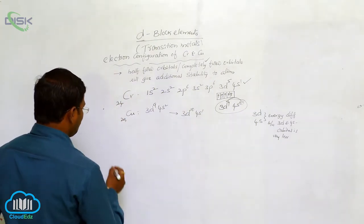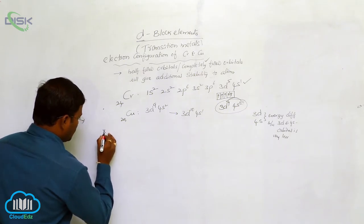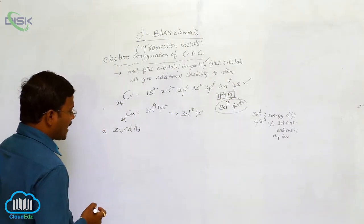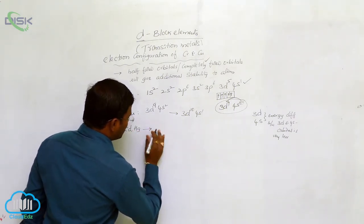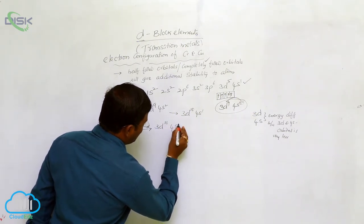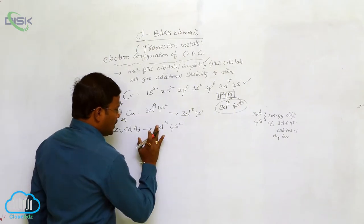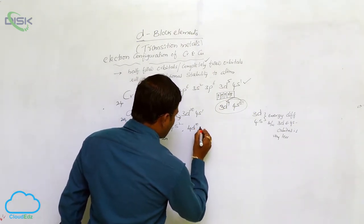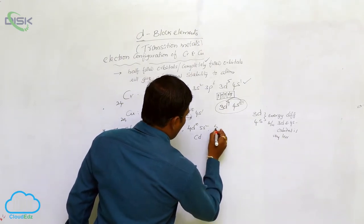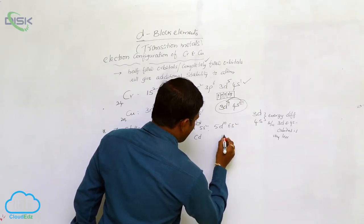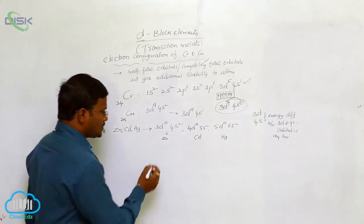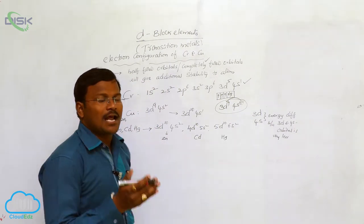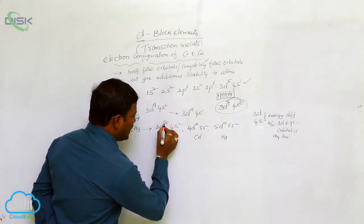Next, consider zinc, cadmium, and mercury. When we observe the valency shell electron configuration of these elements, zinc shows 3d10, 4s2; cadmium shows 4d10, 5s2; and mercury shows 5d10, 6s2. These elements in their atomic state or ionic state have completely filled d-orbitals.